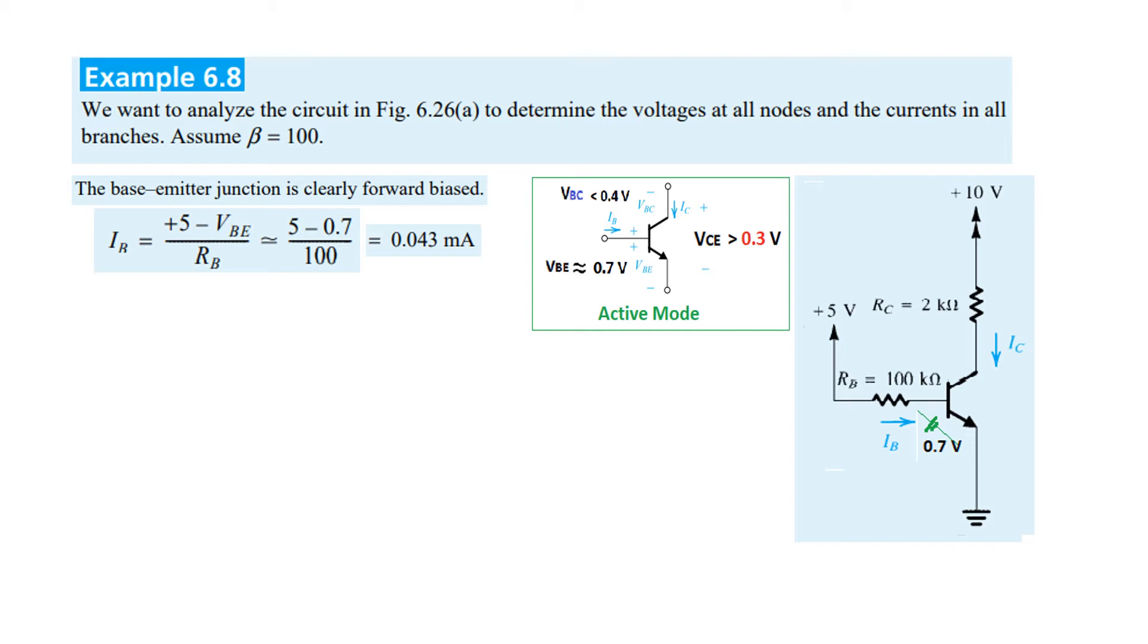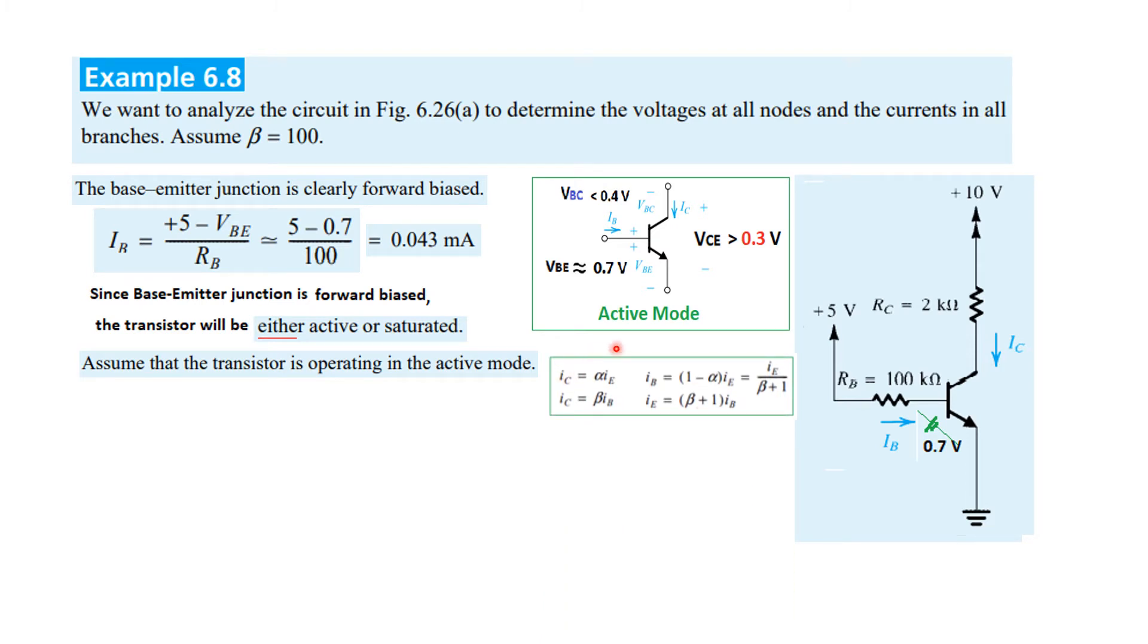Since the base-emitter junction is forward biased but we don't know about the base-collector, the transistor will be either in active mode or saturated mode. As discussed in previous videos, we initially assume it to be in active mode. With this assumption, these formulas are applicable.